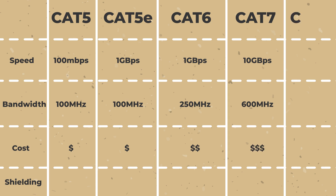CAT 8 cables provide data transmissions of up to 25 gigabits per second at a bandwidth capacity of 2 gigahertz. And as you'd expect, better performance and the latest tech will cost the most.